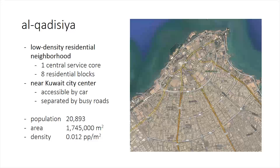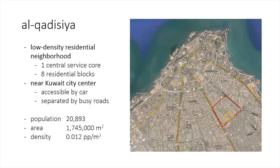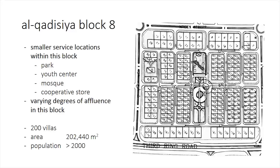The growth of Kuwait City can be seen in the formation of ring roads around the Central Business District. We focus on Alkansia, the neighborhood outlined in red. It consists of one central service core and eight residential blocks surrounding it. We focus in particular on Block 8, outlined in gold. The neighborhood is near the Central Business District, less than two kilometers away, but because of the busy roads surrounding it, it's accessible only by car.